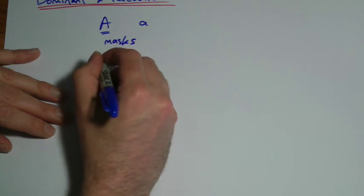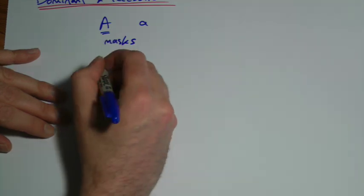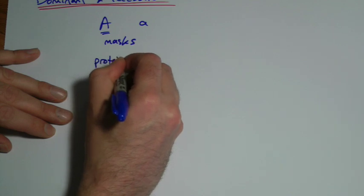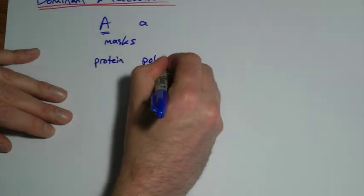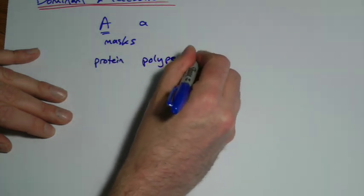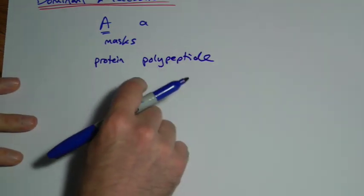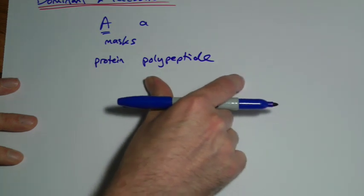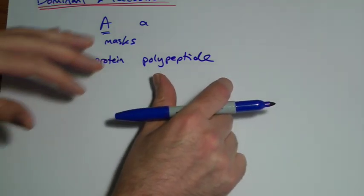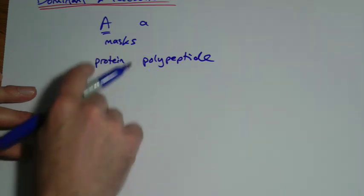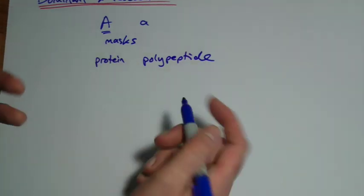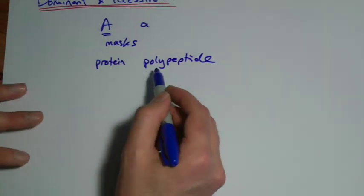If you think back that an allele is responsible for making a protein, okay, by the way I'll just throw in here as well this term polypeptide. Polypeptide really means a string of amino acids, so some things can be a short string of amino acids, it doesn't really make them a protein.